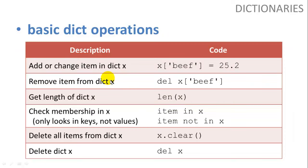So some basic dictionary operations. You can add or change an item in dictionary x by saying x key is equal to value. If this key is already existing in the dictionary, then it will change the value to this. If the key doesn't exist in the dictionary, it will add this key-value pair to the dictionary. Remove item from dictionary x, delete x, and then the key. Get the length of a dictionary using the len function. Check membership in x, item in x, or item not in x. This only looks in the keys. It does not compare to values. So if we want to look through values, I'll show you a way on the next slide to do that. Delete all items from dictionary x, we can say x.clear, and delete the entire dictionary x, delete x, del x.